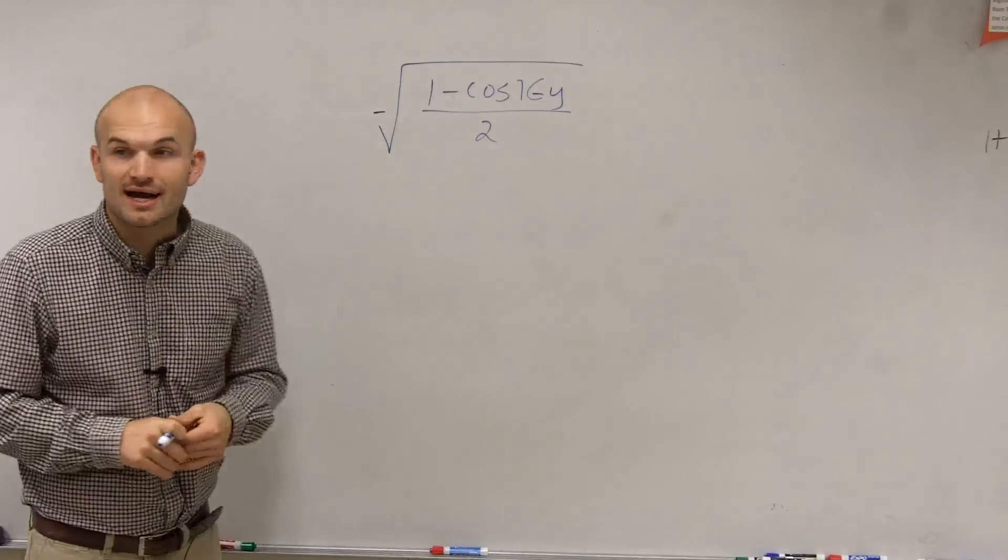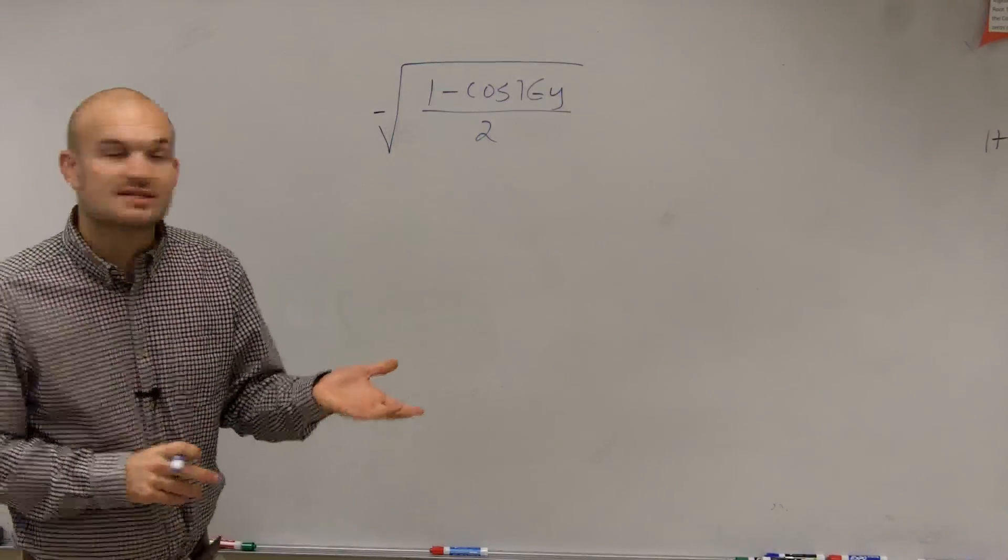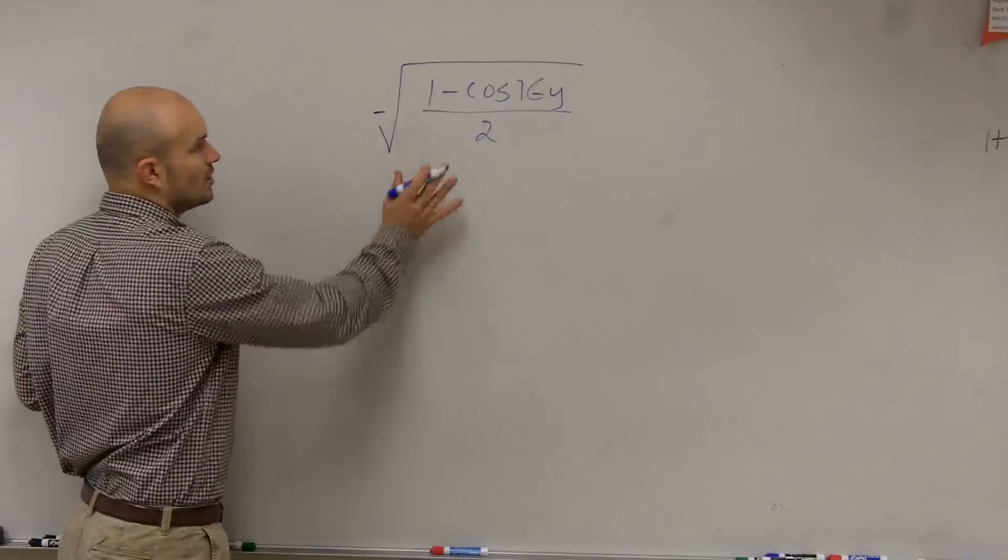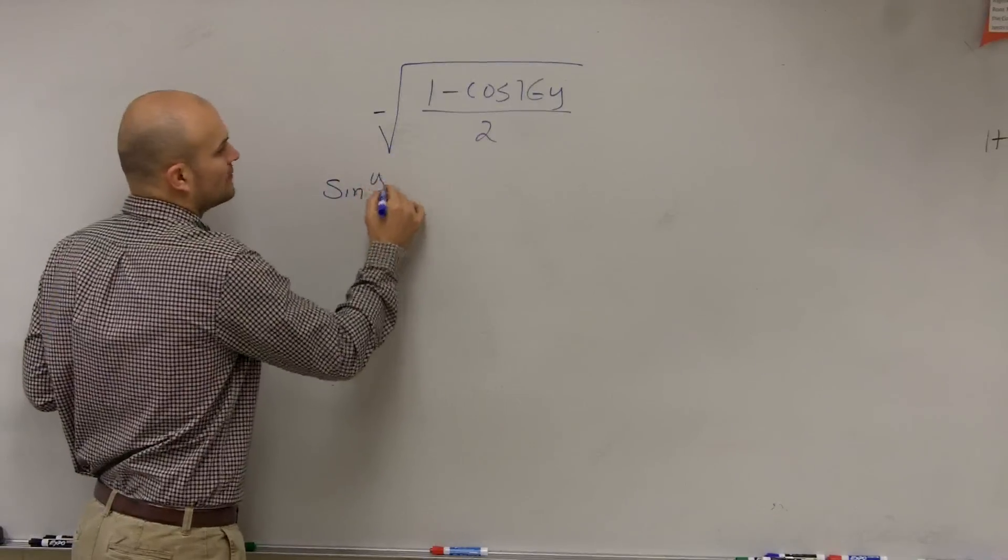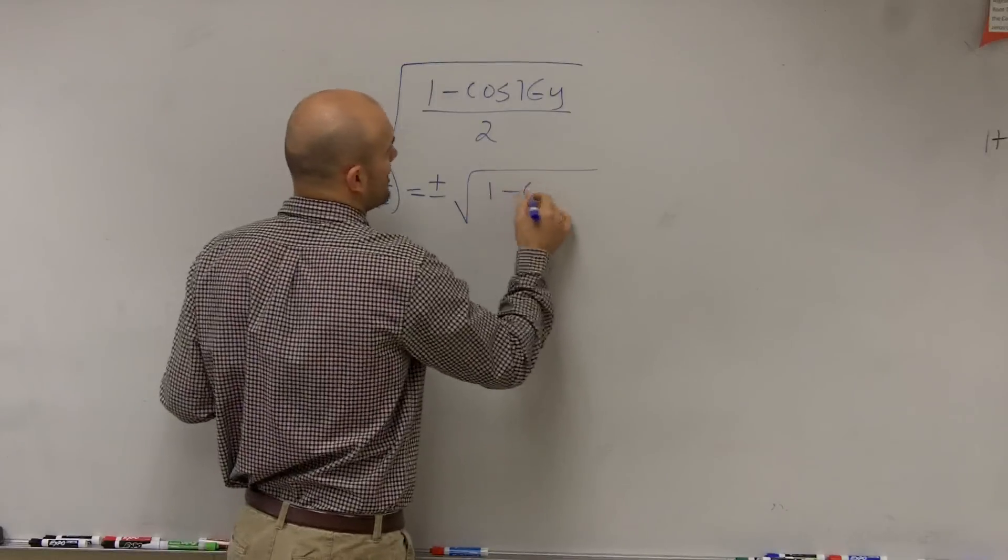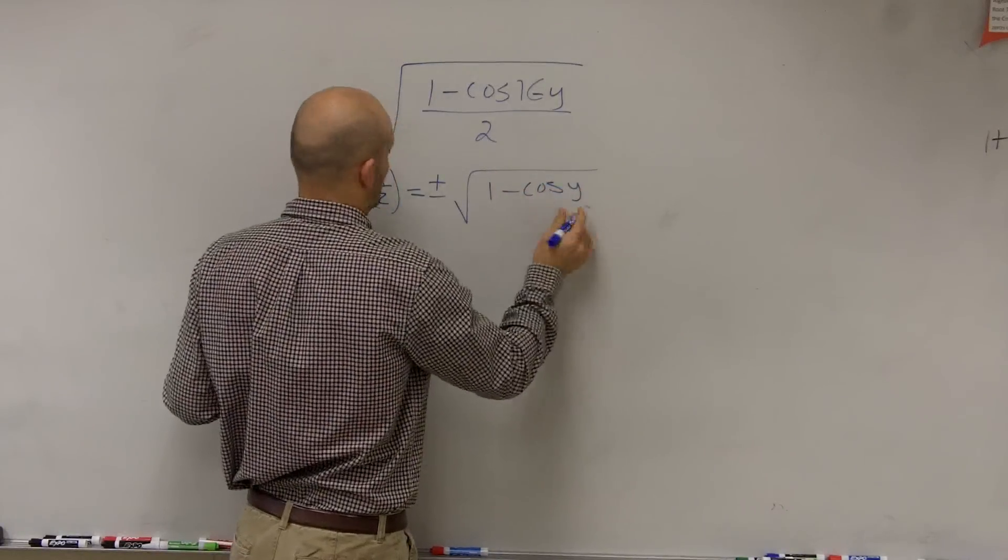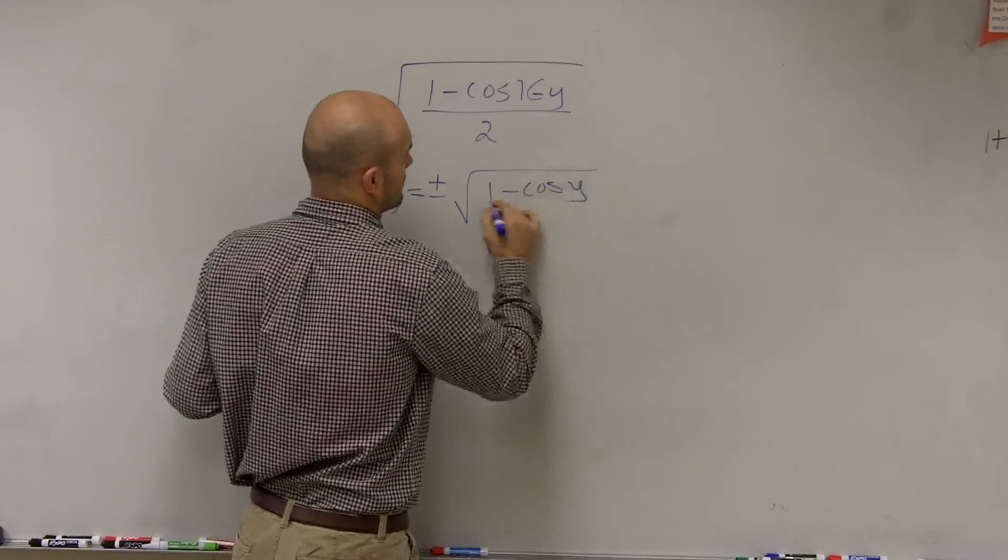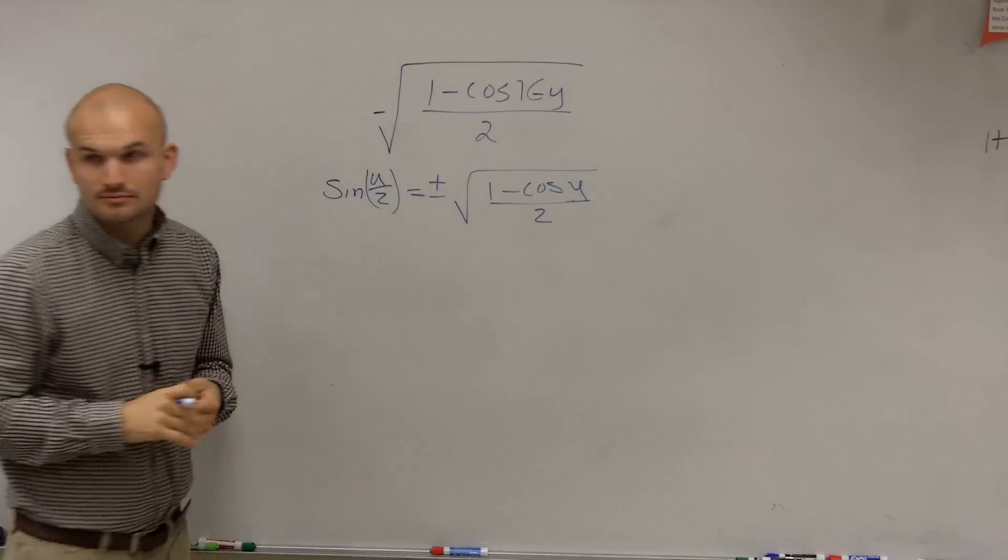And I remember when I have cosine, that's going to be dealing with the sine of my half angle. So I know that the sine of u over 2, correct me if I'm wrong, is plus or minus the square root of (1 minus cosine of u) divided by 2, correct?